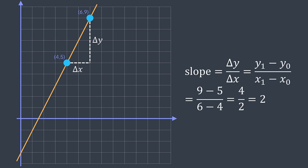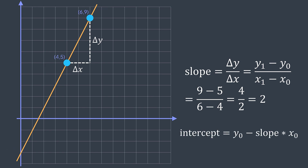For the intercept, now that we have the slope, we can subtract how much Y changes multiplied by the distance from 0. For example, the slope is 2 and at X = 4, we have Y = 5. So at X = 3, Y = 3; at X = 2, Y = 1; at X = 1, Y = −1; and at X = 0, Y = −3. So the intercept is −3. What we did is start from Y0 and subtract the slope X0 times. So the intercept is Y0 − slope × X0.